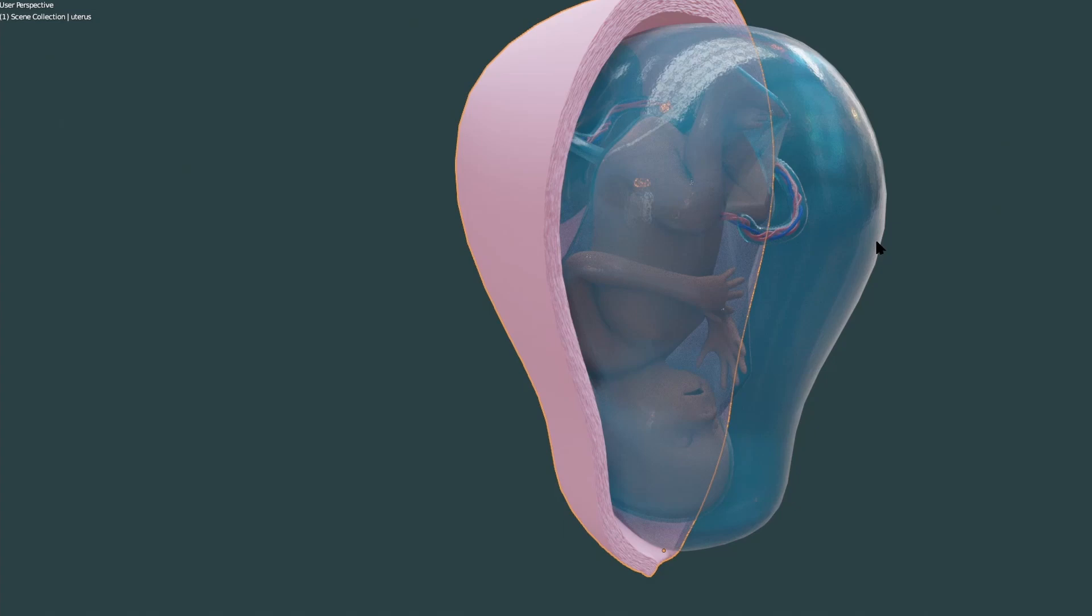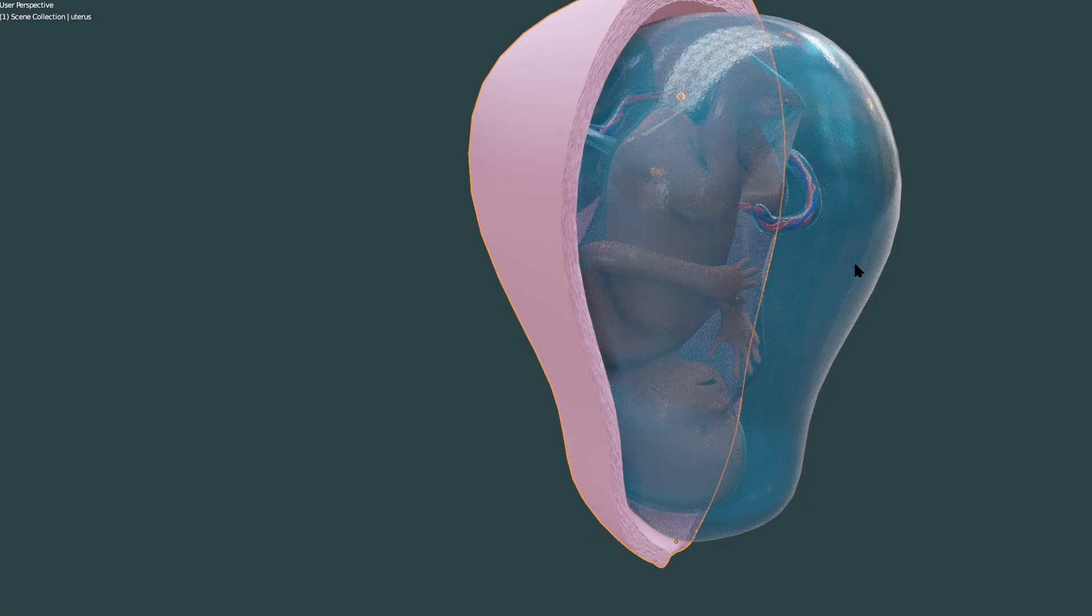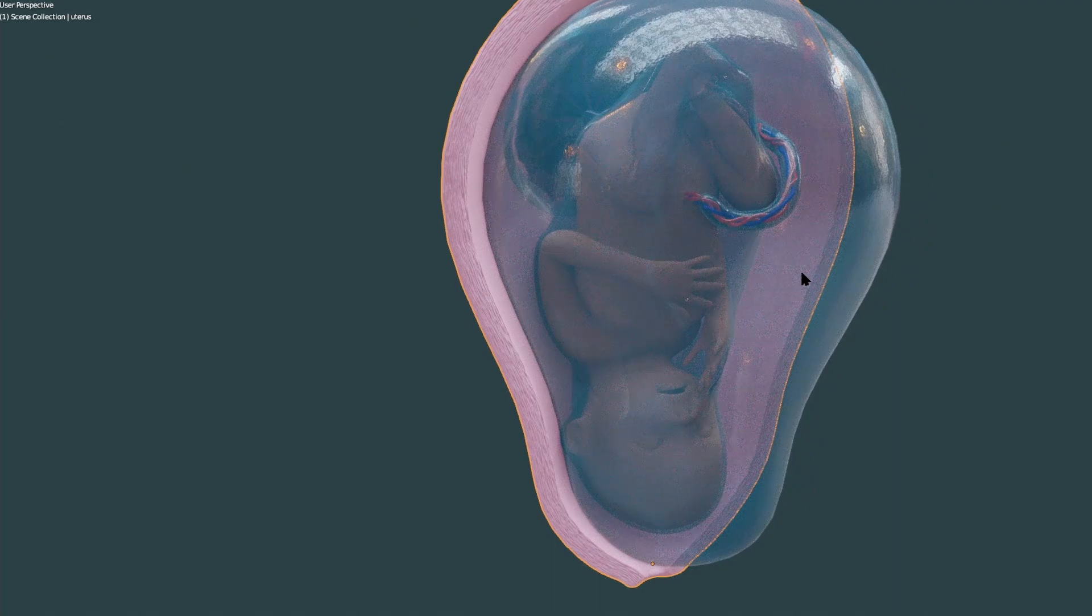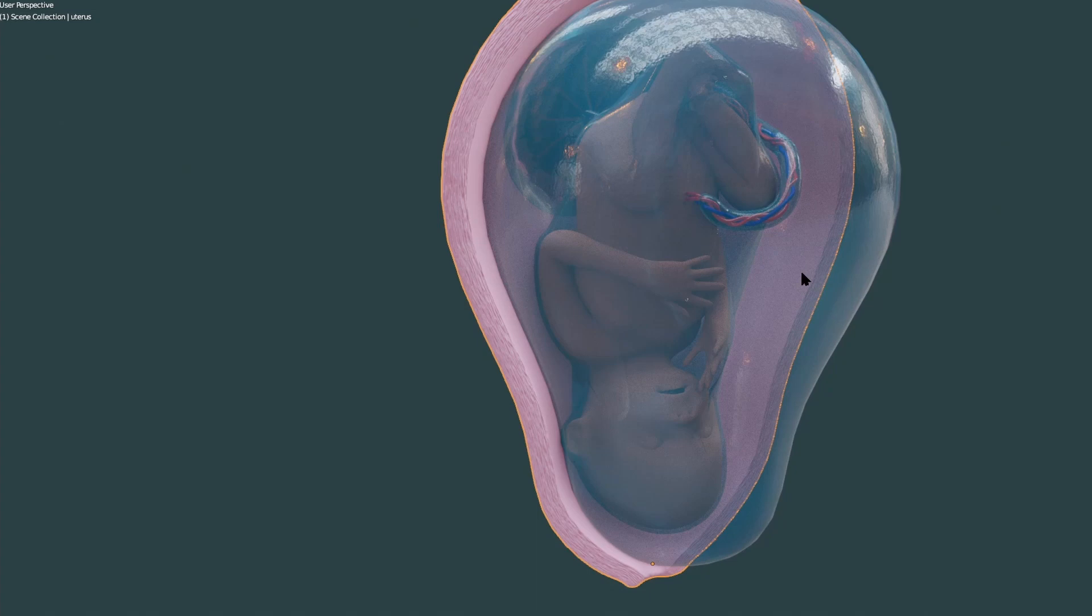What is the function of amniotic fluid? It basically acts as a shock absorber. This is the main function. Other than that there are certain other functions as well. One of the important functions is that it helps the baby to easily move inside this amniotic cavity, and as you can see the baby is developing within this amniotic cavity at this stage.